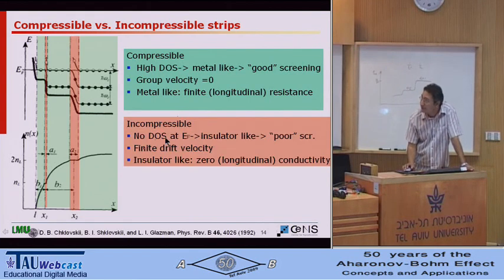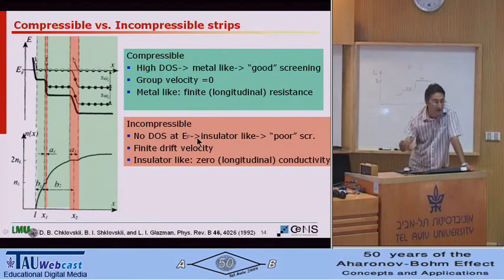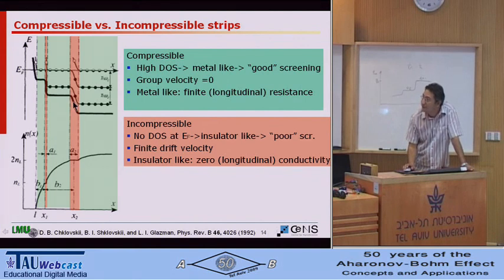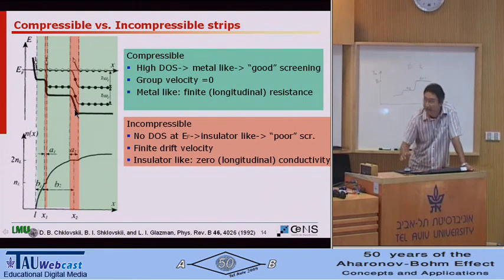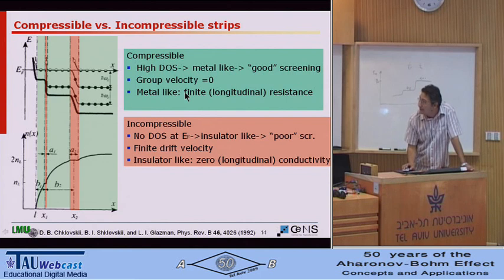In the incompressible strip, however, you have no density of states at the Fermi level, so you can say it's an insulator-like state. Poor screening, but fortunately there will be a finite edge velocity that you can carry equilibrium current at this point. And it's insulator-like because the longitudinal conductivity vanishes. And this is something interesting.